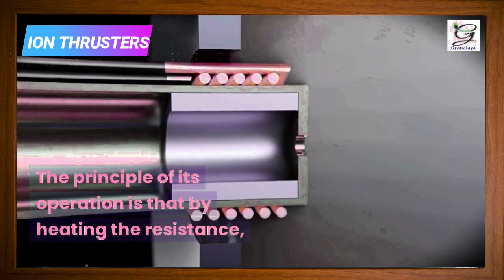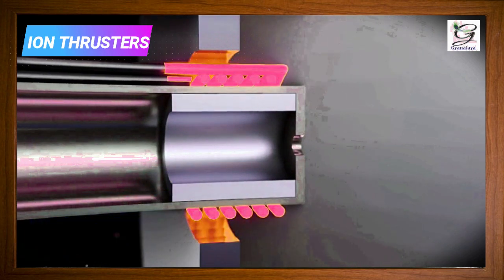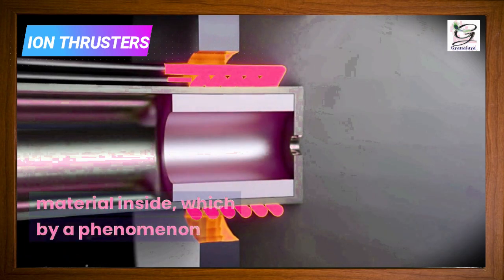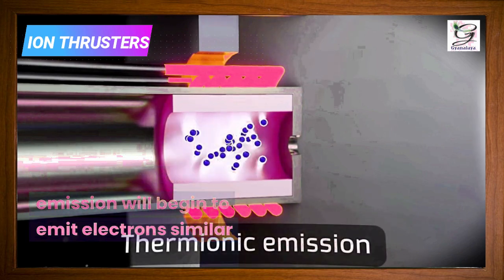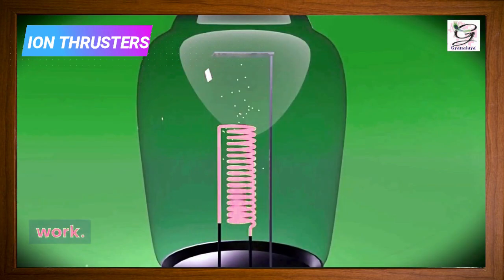The principle of its operation is that by heating the resistance, this will heat the material inside, which by a phenomenon known as thermionic emission will begin to emit electrons, similar to how vacuum diodes work.